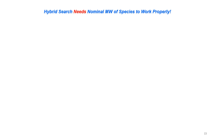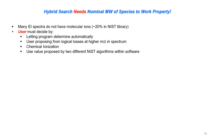The delta mass value is a very important result from the hybrid search. For it to work properly, one needs the nominal molecular weight of the unknown species. About 20% of EI spectra in the NIST library do not have molecular ions, so the user must determine molecular weight in several ways: letting the program determine it automatically, proposing it from logical losses at higher m/z ions and entering it manually, doing chemical ionization to determine molecular weight, or using two user values proposed by different NIST algorithms within the software.